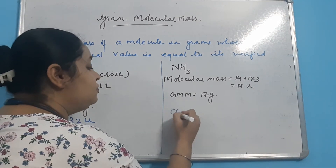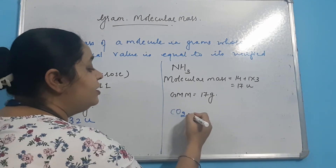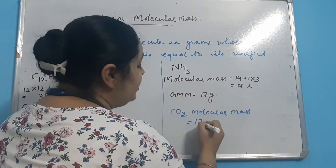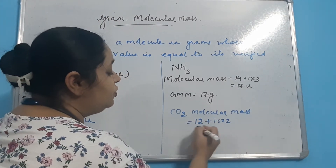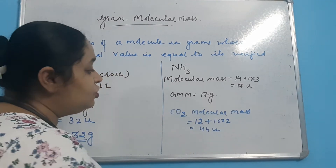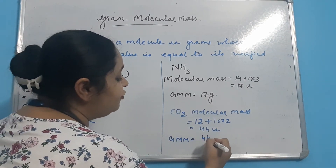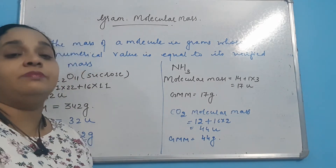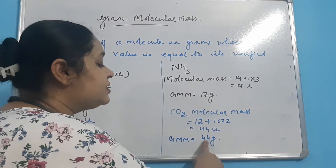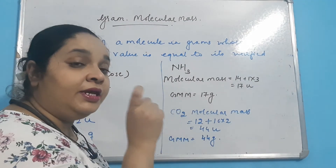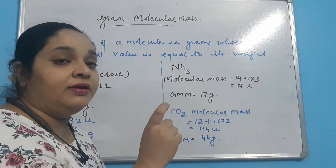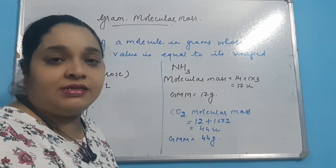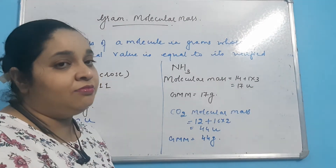More examples: let us take CO2. The molecular mass of CO2: carbon 12 plus oxygen 16 into 2 equals 44U. So CO2 ka gram molecular mass kitna ho jayega? 44 grams. To kisibhi molecule ka mass jab hum gram unit mein lete hain — lekin uski numerical value uske unified mass ke barabar hi ho — sirf jo hamara unit hai woh change ho raha hai, hum usse gram mein measure kar rahe hain — usko gram molecular mass kaha jata hai. That is known as gram molecular mass.